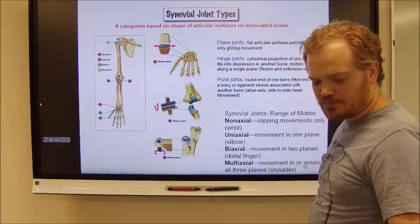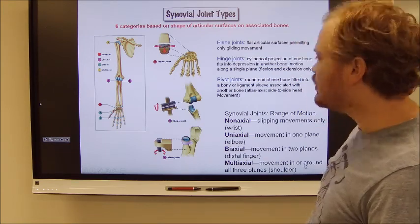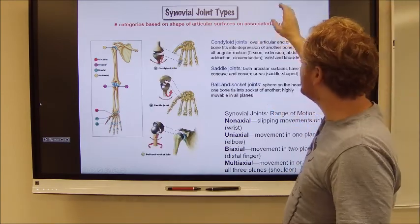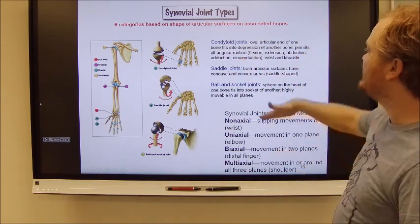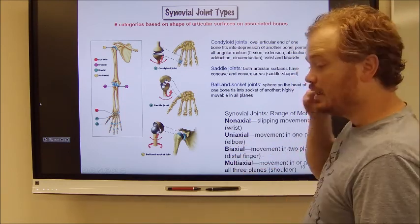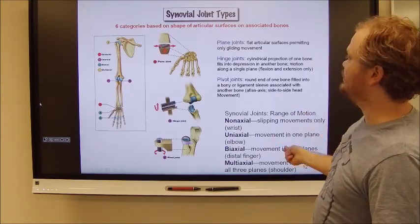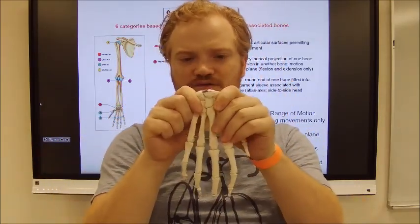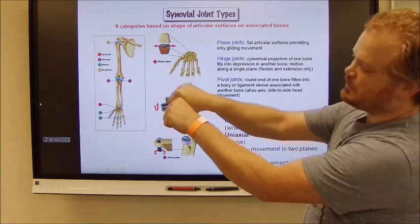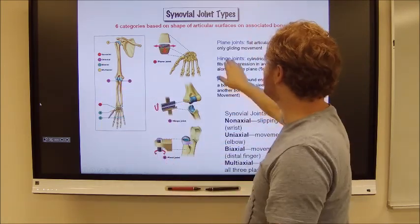There are plane joints, hinge joints, pivot joints, condyloid joints, saddle joints, and ball and socket joints. We can further classify these as non-axial, uniaxial, biaxial, or multiaxial. Plane joints are like those seen in the wrist and the carpals — these bones don't really rotate around each other, they shimmy and glide past one another. They don't rotate, so it's considered non-axial — slipping movements. A hinge joint is like that seen in a door, like my elbow or my finger. It is typically uniaxial — if I put a pin through my elbow, it would rotate on that axis.